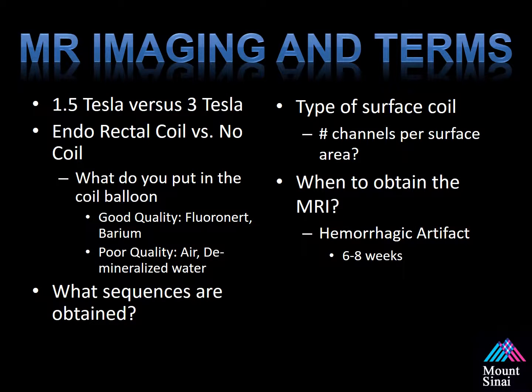Here are some common terms associated with MRI imaging. First, Tesla or field strength — the higher the number, the higher the signal-to-contrast ratio. It's been found that 3 Tesla outperforms 1.5 Tesla in multiple publications. The next is the endorectal coil versus no coil. An endorectal coil provides a 5 to 10 times increase in signal detection during the MRI. If signal is currency, the MRI with an endorectal coil does produce higher quality images.